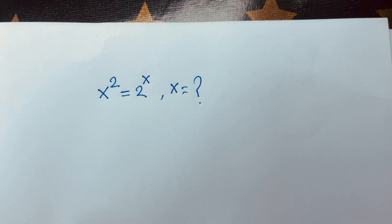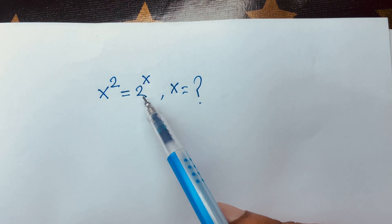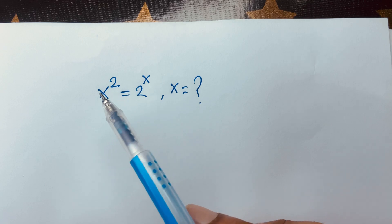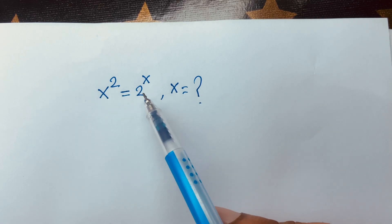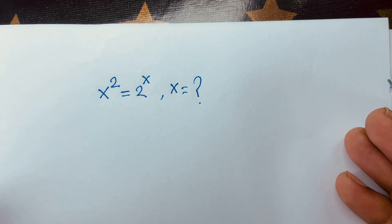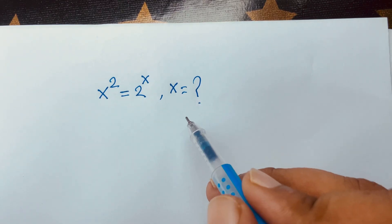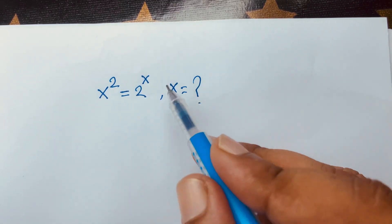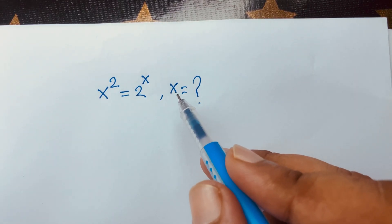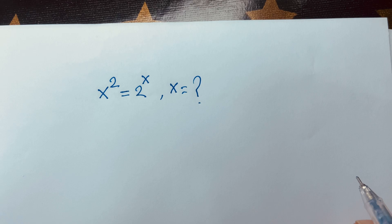And if you think x is equal to 4, you can see easily 4 squared equals 2 to the power 4, so 16 is equal to 16. It is also a right answer. But we need all values of x in this exponential equation.